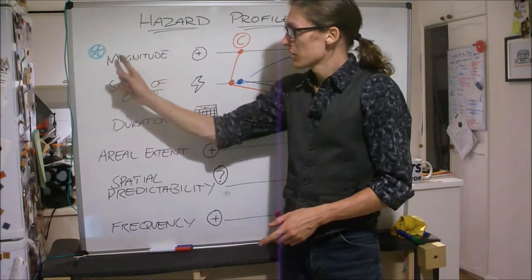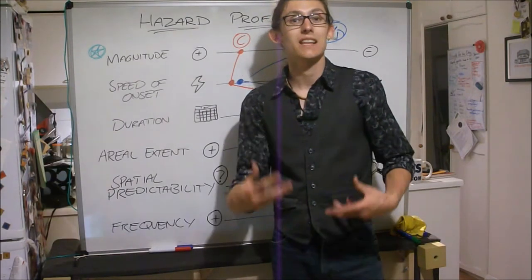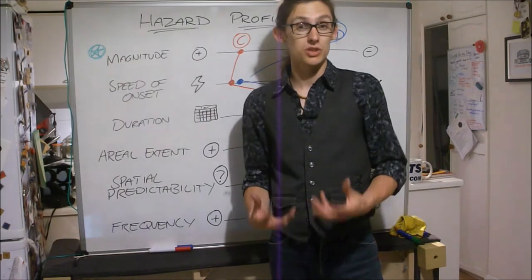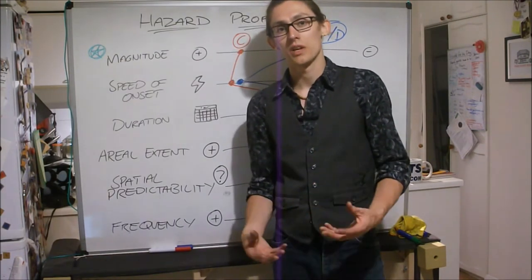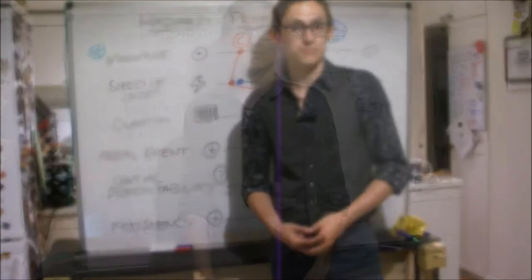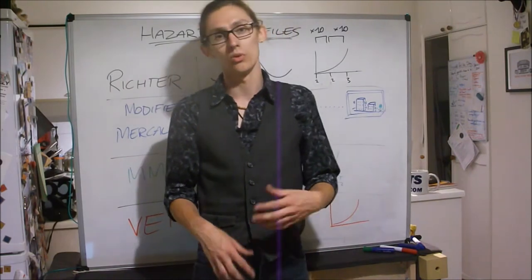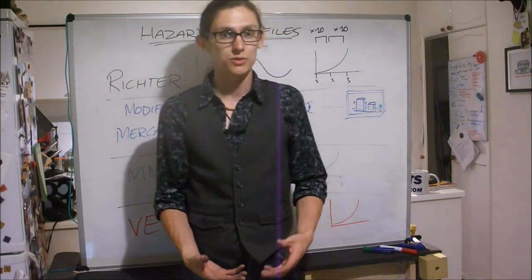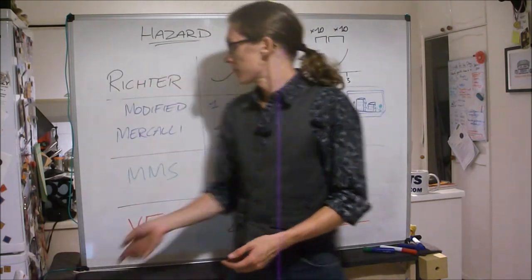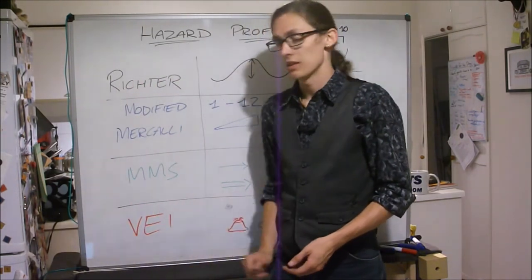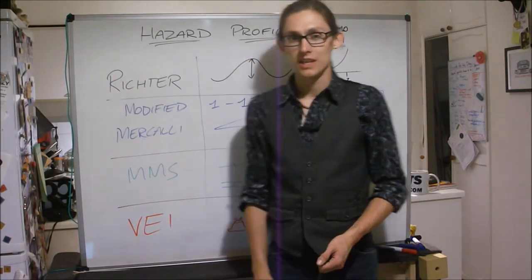Now I've starred magnitude because I'll just go into that a little bit further by looking at some of the scales of magnitude that we use when we're thinking about hazard profiling. So in terms of scales that we use for magnitude for tectonic events, we are looking at the Richter scale, the modified Mercalli scale, the MMS scale, and the VEI.